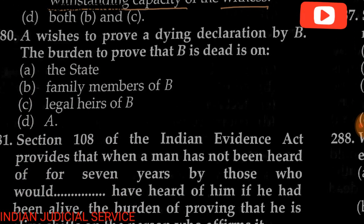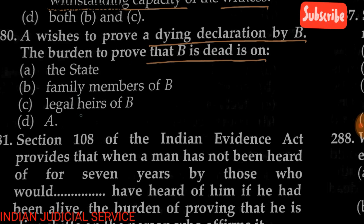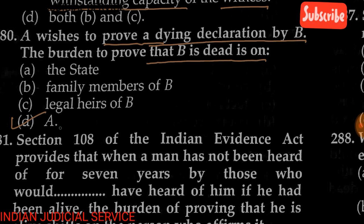Question number 280: A wishes to prove a dying declaration by B. The burden of proving that B is dead lies on — the state, the family member of B, the legal heir of B, or A. The answer is option D: A, because A is wishing to prove the dying declaration by B, so the burden of proof is on A.